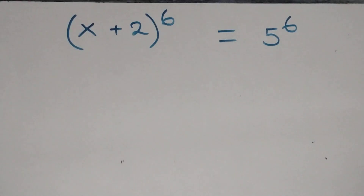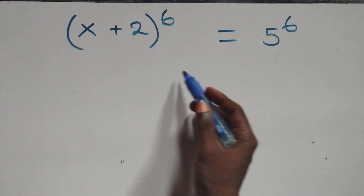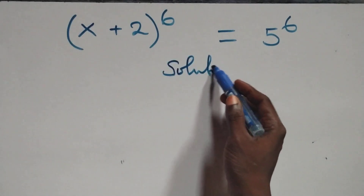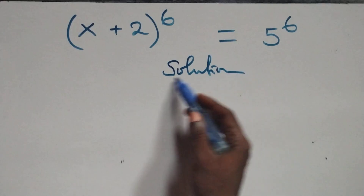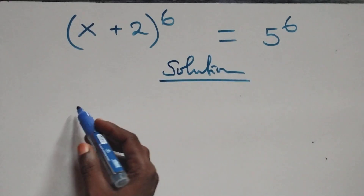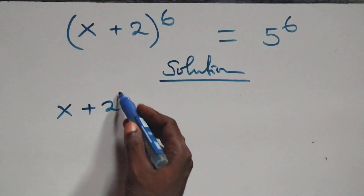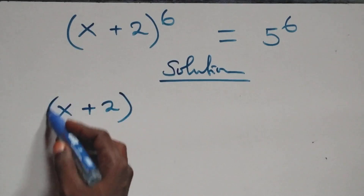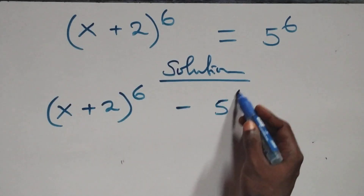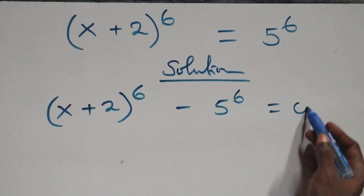Hello, you are welcome. How to solve this nice exponential equation. From what we have here, we take 5 raised to the power 6 to the left-hand side, and this becomes (x + 2) raised to the power 6 minus 5 raised to the power 6, then equals to 0.